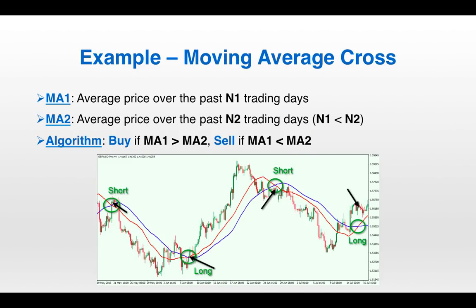Let's walk through an example of a quant trading strategy — specifically the moving average cross. MA1 is the average price over the past N1 trading days, and MA2 is the average price over the past N2 trading days, with N1 less than N2. The algorithm is very simple: buy if MA1 is greater than MA2, sell if MA1 is less than MA2.